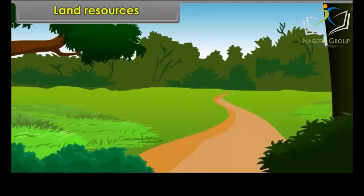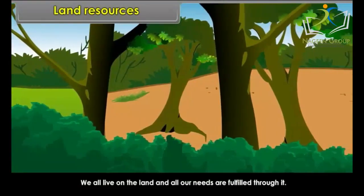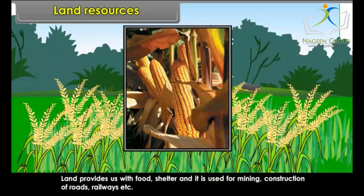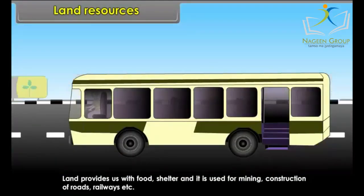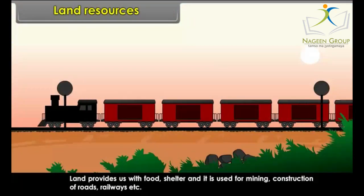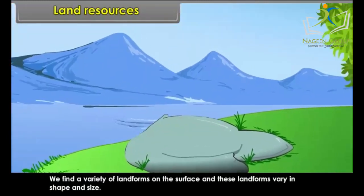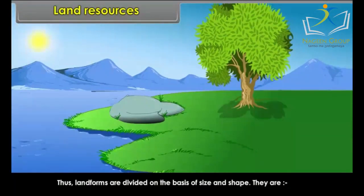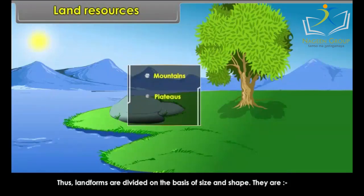Land Resources. We all live on the land and all our needs are fulfilled through it. Land provides us with food, shelter, and it is used for mining, construction of roads, railways, etc. We find a variety of landforms on the surface, varying in shape and size. Landforms are divided on the basis of size and shape — they are mountains, plateaus and plains.